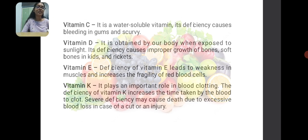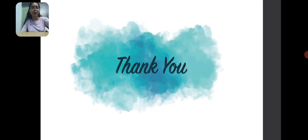We can get vitamin D from sunlight. Deficiency of vitamin E leads to weakness in muscles and increases the fragility of RBC cells. Vitamin K plays an important role in blood clotting. Deficiency of vitamin K leads to heavy blood loss in cuts or injuries. Thank you.